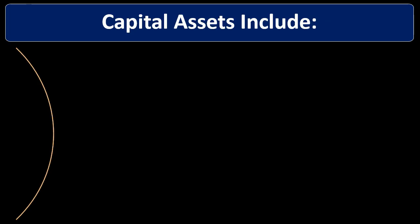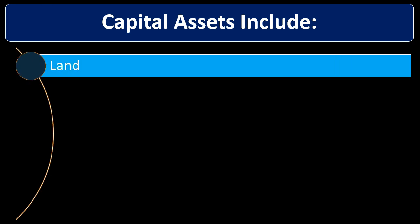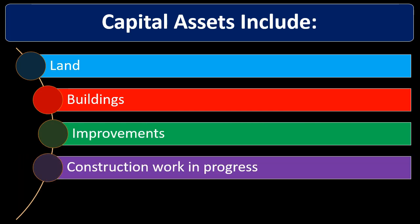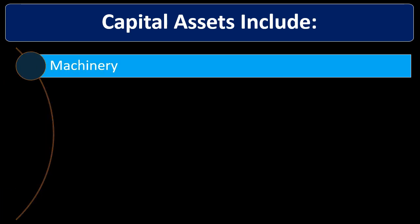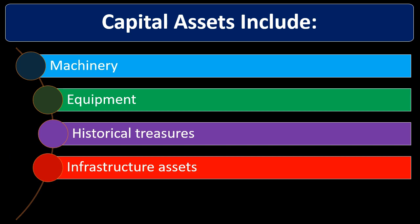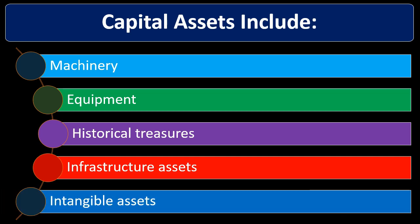Capital assets in governmental accounting would include land — note that land is the exception to depreciation, as we don't typically depreciate land. Then we have buildings, improvements, and construction work in process. If we're making something like a building or improvement, the work in process is capitalized. We also have vehicles, machinery and equipment, historical treasures — which are unique to governmental accounting — infrastructure assets, and intangible assets.